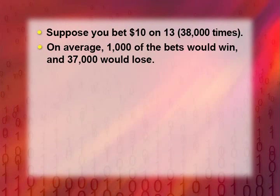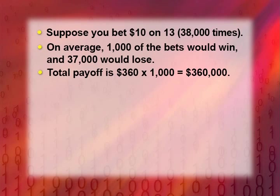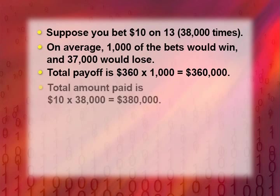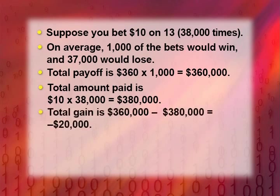If we win 1,000 times, the total amount of money we take in is $360 times 1,000, for a total of $360,000. But to have played 38,000 times, we paid $10 per time — a total of $380,000 paid out. The difference between the $360,000 we brought in and the $380,000 we paid out means we lost $20,000.